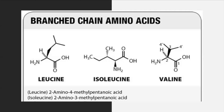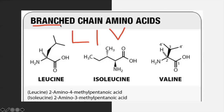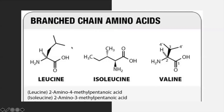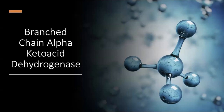The branched-chain amino acids — I use the mnemonic LIV: 'I branch out to others so that they may live.' This stands for leucine, isoleucine, and valine. Based on the classification of amino acids according to the R group, this is probably number one on the list of what will come out in the boards.